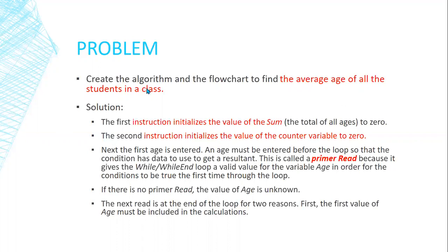Create an algorithm — steps to solve the problem — and a flowchart, which is a visual representation of the algorithm, to find the average age of all the students in a class. We assume that we don't know how many students we have in this class.